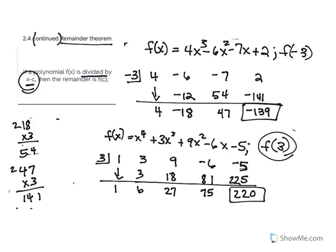Our shelf is 3, top row is 1, 3, 9, negative 6, negative 5. Bring down the 1. 1 times 3 is 3; 3 plus 3 gives us 6. 6 times 3 is 18; add down to get 27. 27 times 3 is 81; negative 6 plus 81 is 75. 75 times 3 is 225; negative 5 plus 225 gives us 220. So f(3) equals 220. On MyMathLab you would just enter 220.